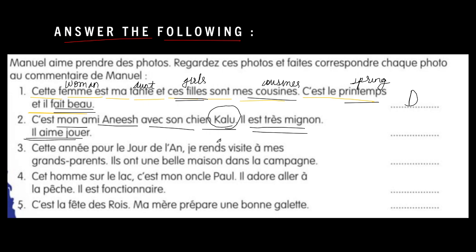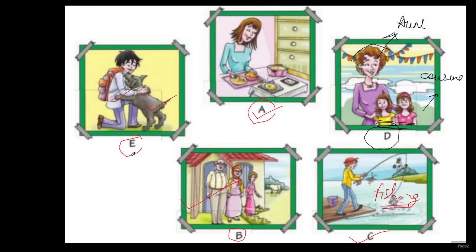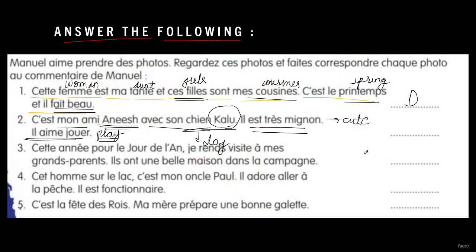The next one mentions a man with a dog. It's my friend Anish with his dog Kaloo. He is very cute and he loves to play. Since the dog-and-boy image appears only once, option E will come here.